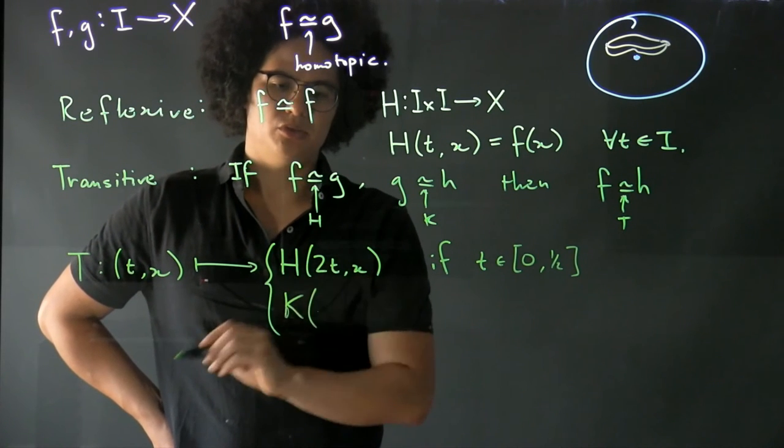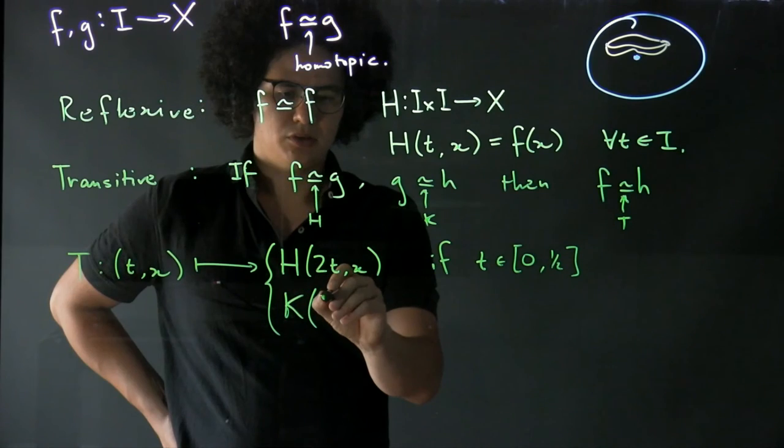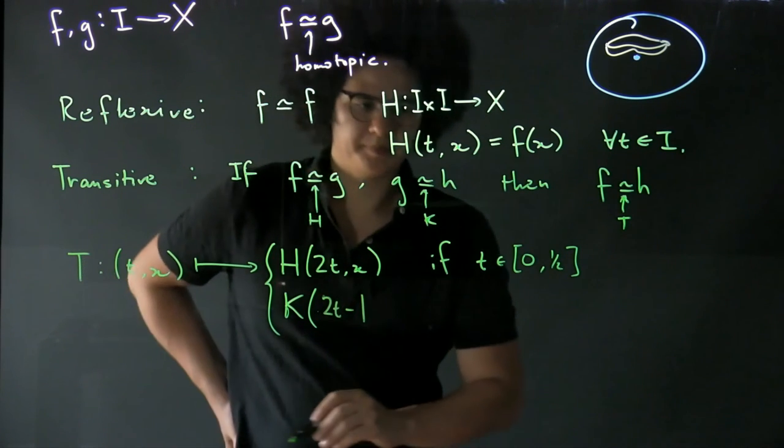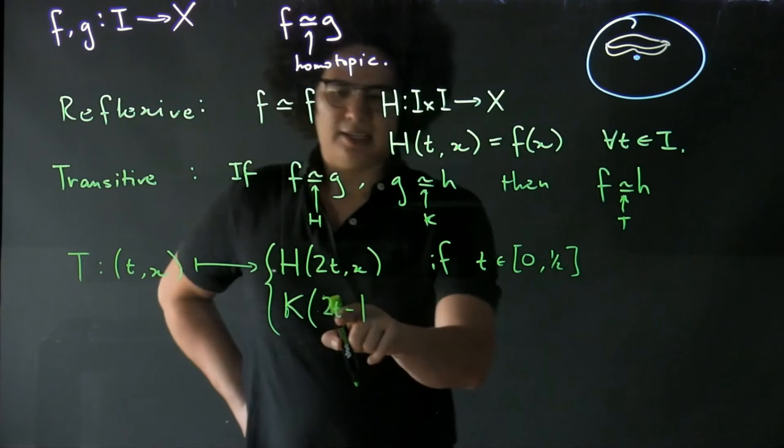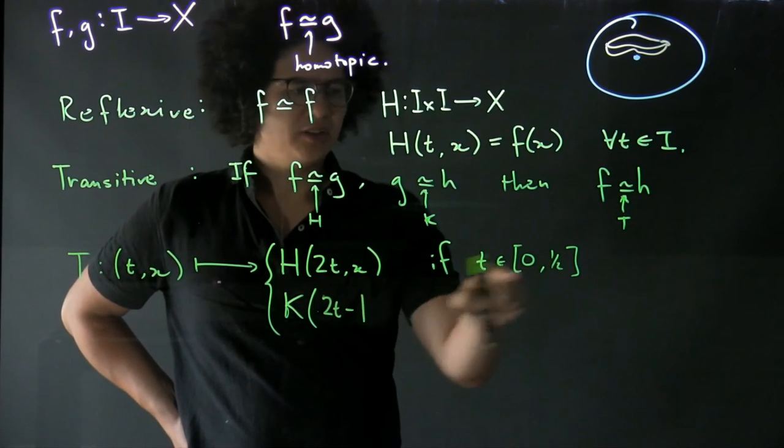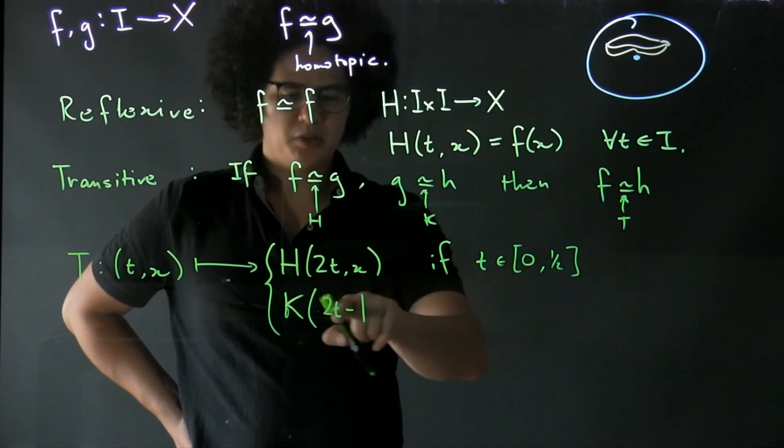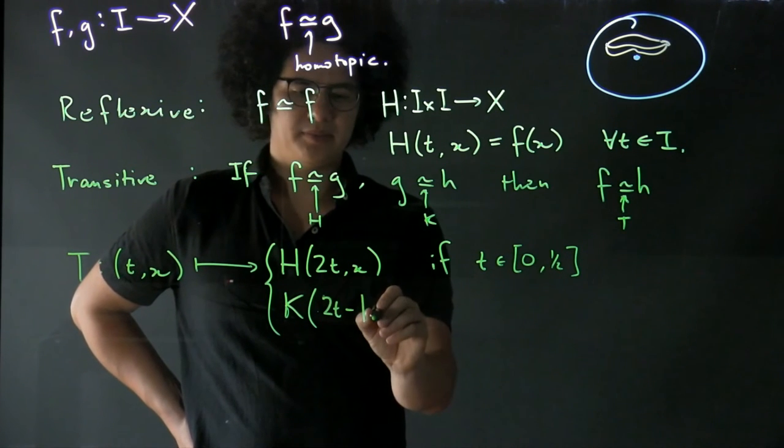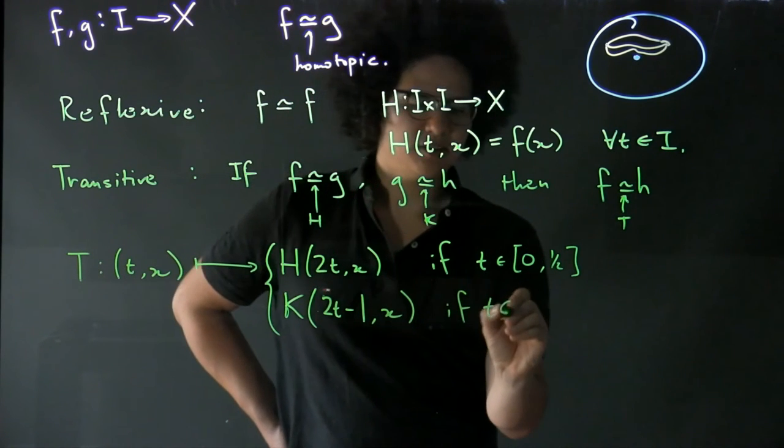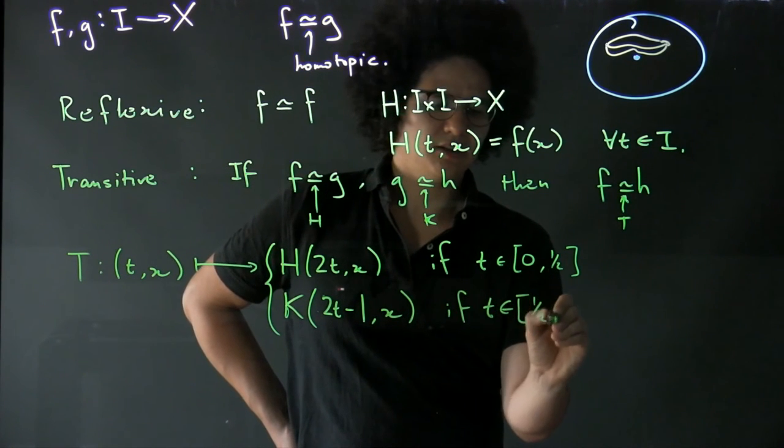And I'm going to do K. And I'm going to do 2T minus 1, so that at T equals a half, this is going to be zero, and at T equals one, this is going to be one of X. If T is contained in half to one.